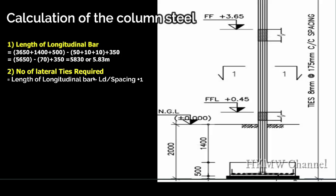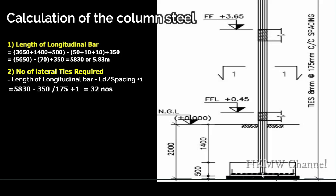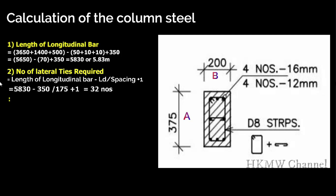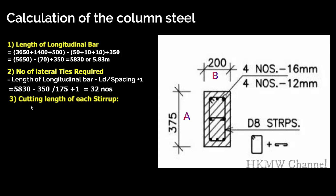Step 2: Number of lateral ties required = (length of longitudinal bar − development length) ÷ spacing + 1. That is: (5.83 m − 0.350 m) ÷ 0.175 + 1 = 32 stirrups required for the whole column up to the first floor.